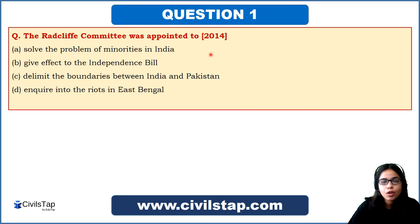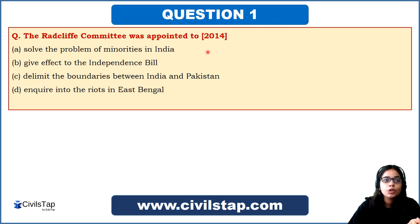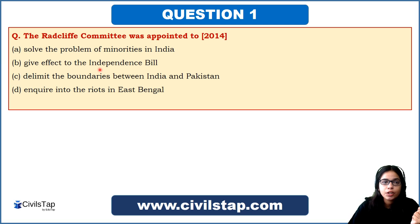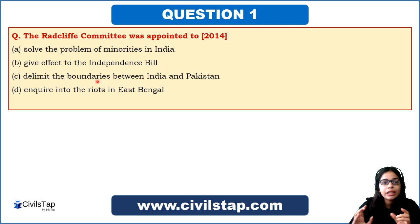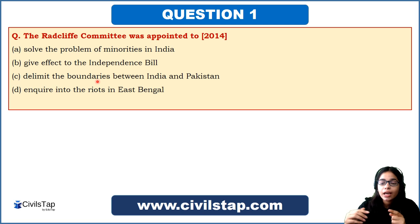This question came in the prelims of 2014. We are asked: the Radcliffe Committee was appointed to do what? Our options are: first, solve the problem of minorities in India; second, give effect to the Independence Bill; third, delimit the boundaries between India and Pakistan; and fourth, enquire into the riots in East Bengal. The answer is C — it was formed to delimit the boundaries between India and Pakistan.